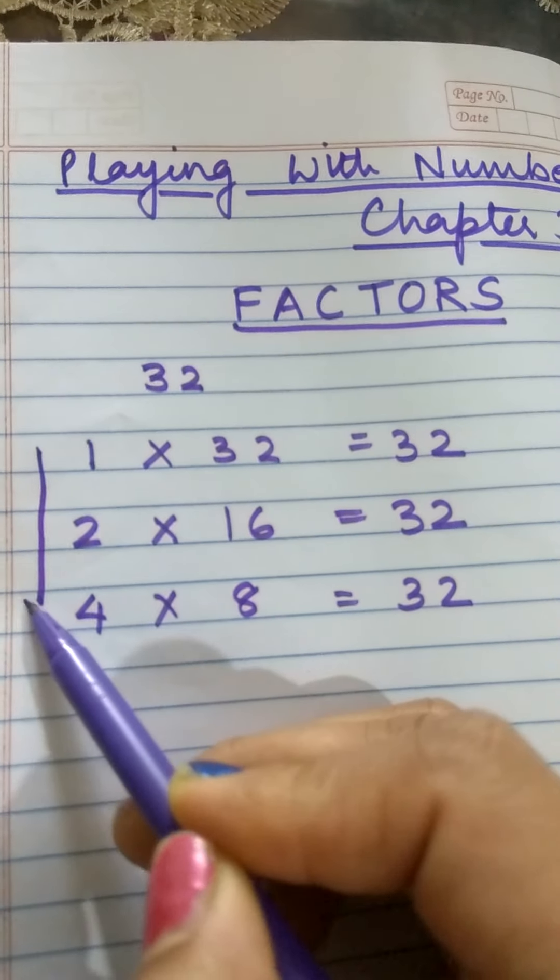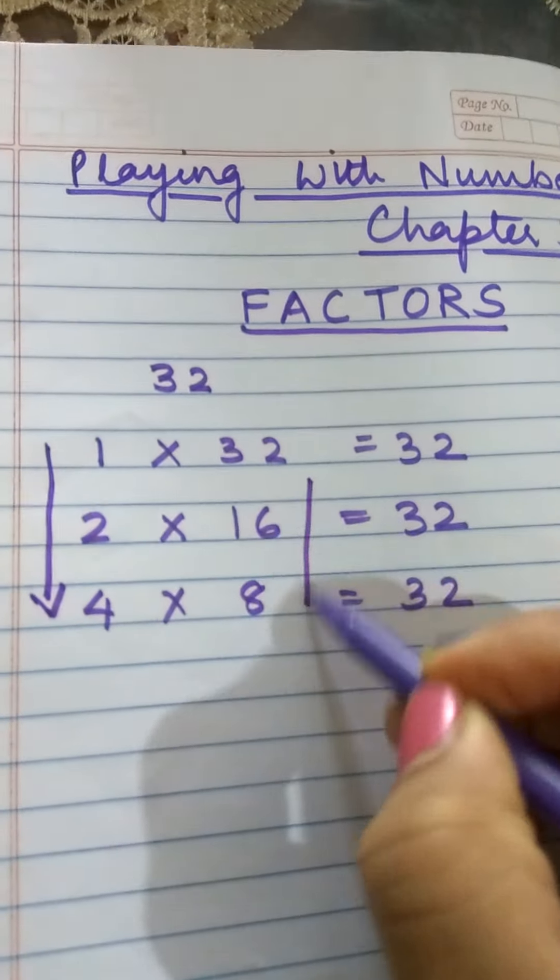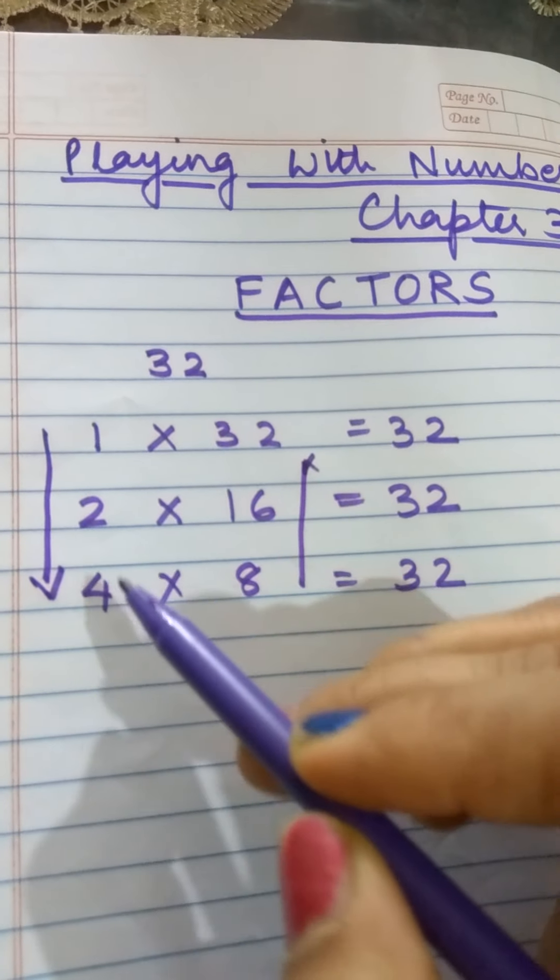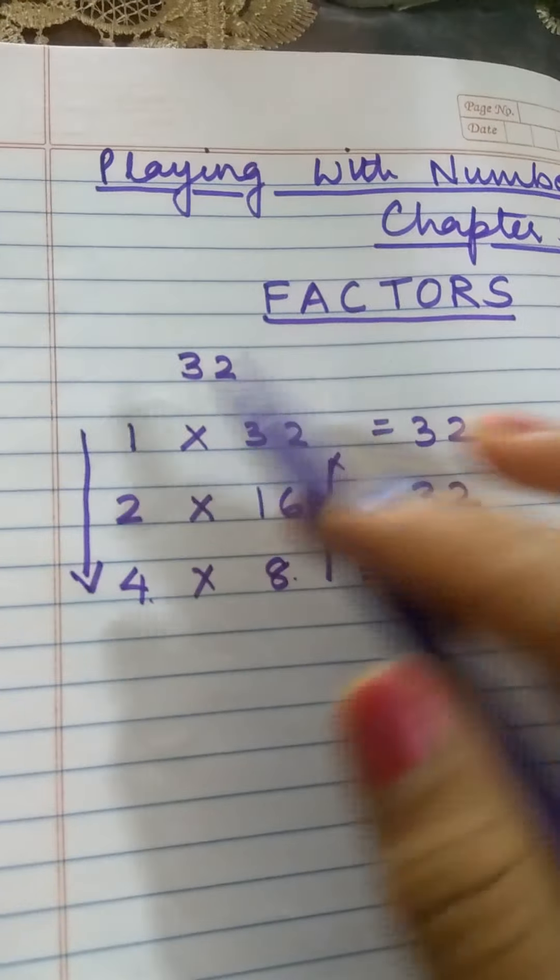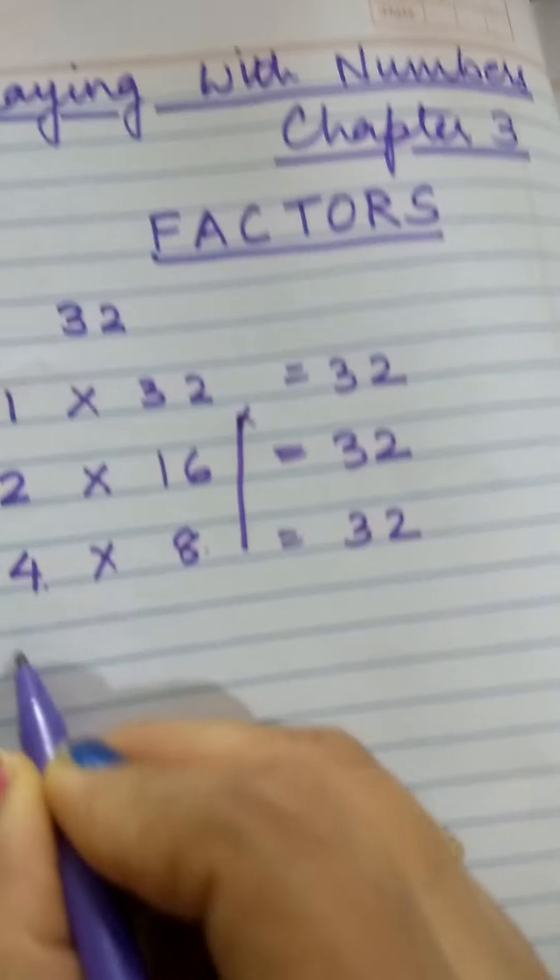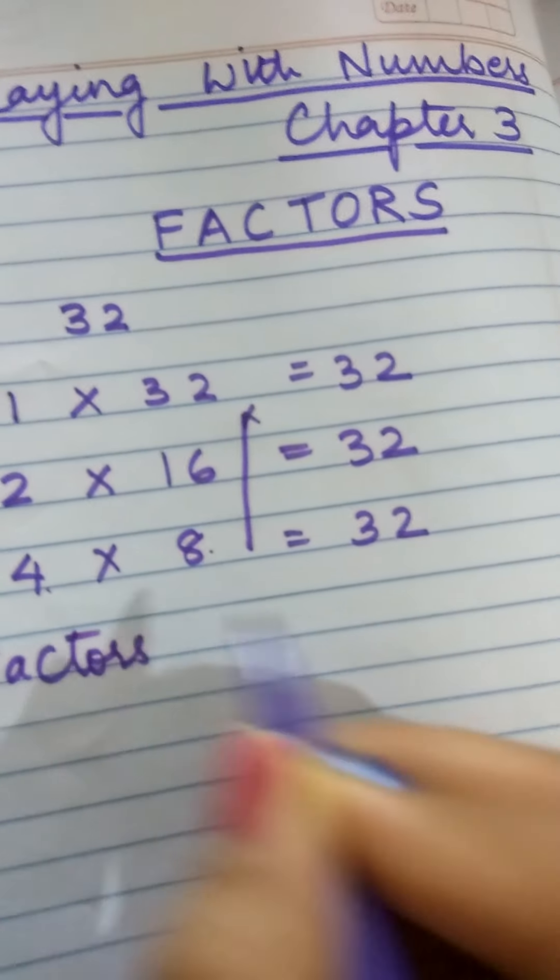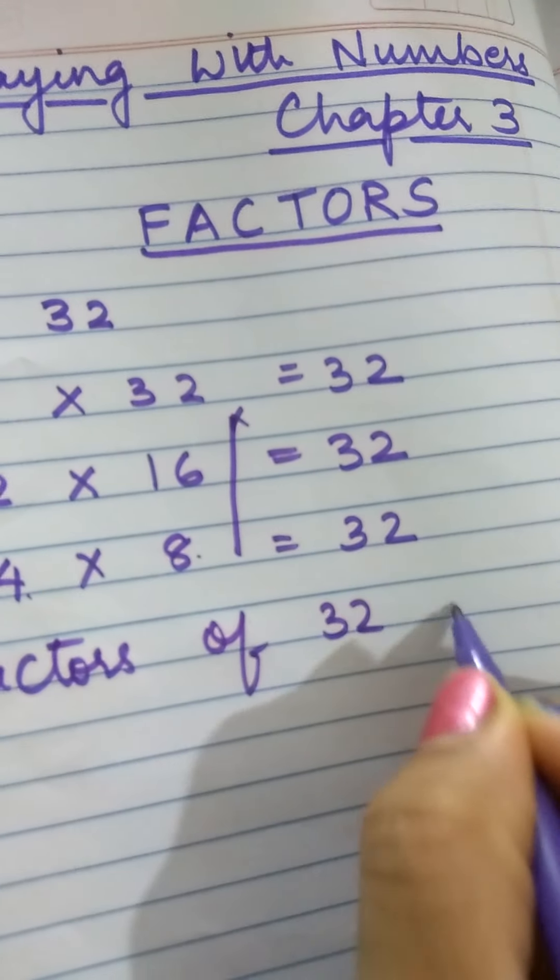And then I will sum up and list all the factors like this. So these 1, 2, 3, 4, 5, 6. These are the 6 factors of 32 which I will sum up like this.